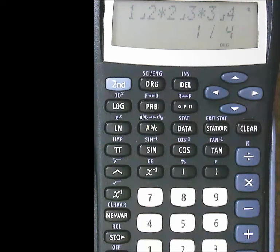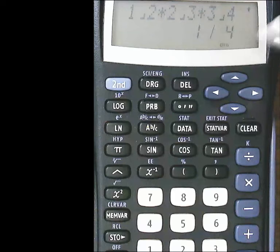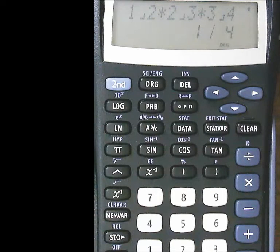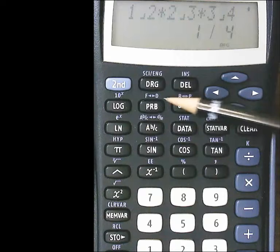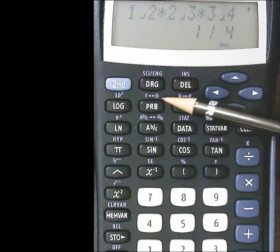Sometimes you might want to write that answer as a decimal. This, most of you probably know in your head, it's .25. But if you're not sure, there's another key, and it'll have like an F with an arrow and then a D. That's like changing between a fraction and a decimal.